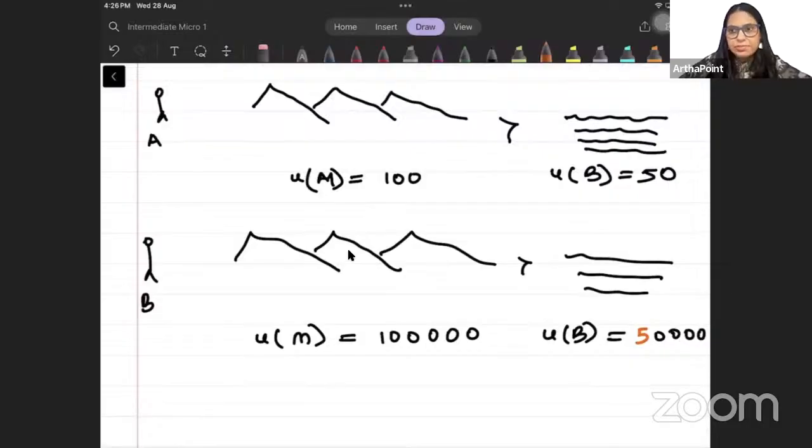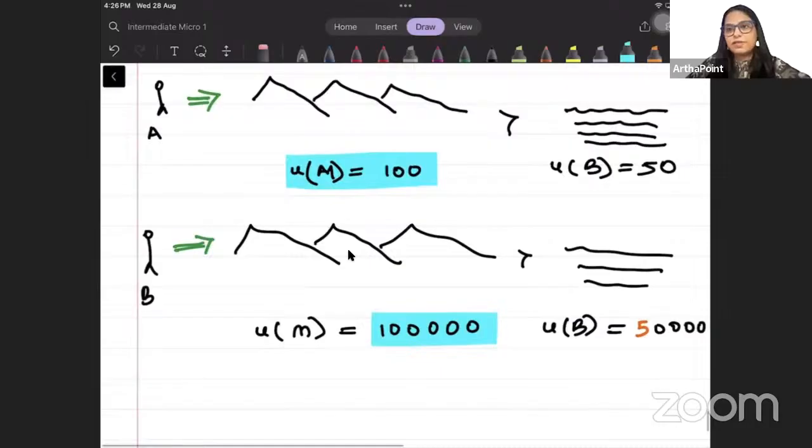Does it mean that mountains make individual B more happy than individual A? Because I don't know what in his background what 1 lakh means. And in his mind what 100 means. This is very individualistic concept. I cannot compare one individual to another. A is also preferring mountain to beach. And B is also preferring mountain to beach. So, we cannot go ahead and we cannot compare utility between individuals. We can only compare bundles for one individual. Because he is giving preference to different bundles using the same unit in his mind.